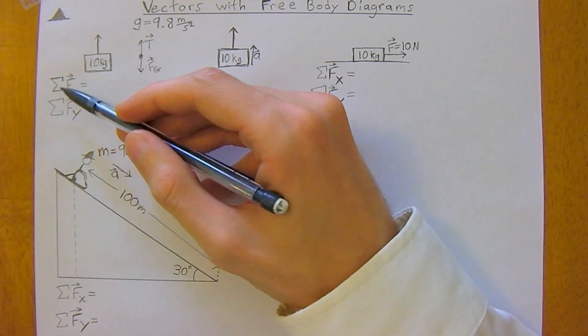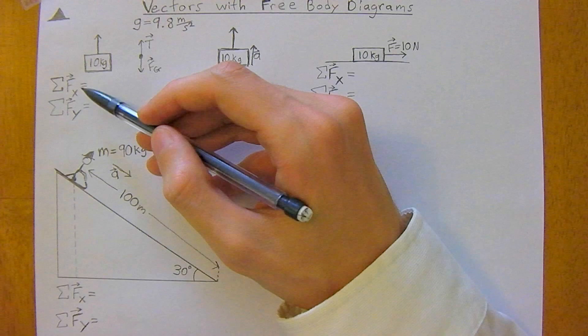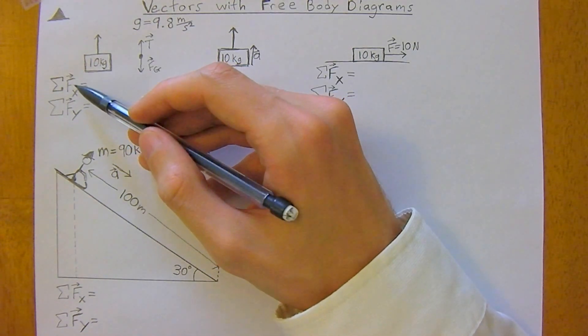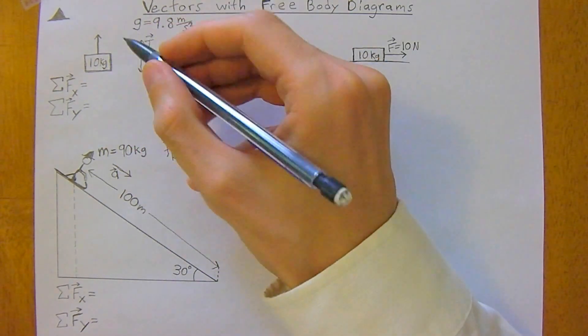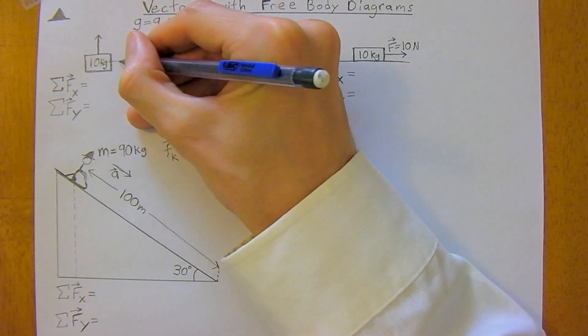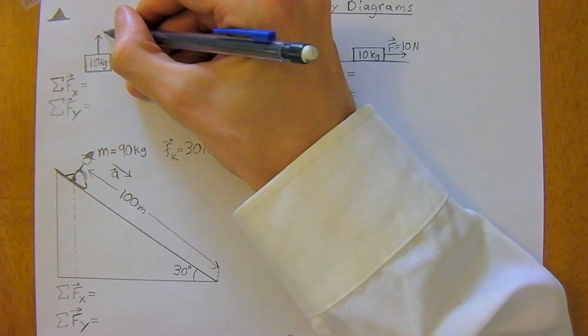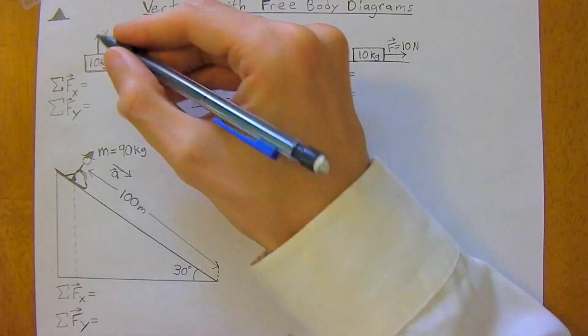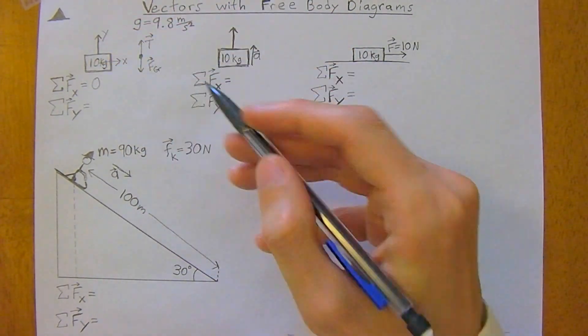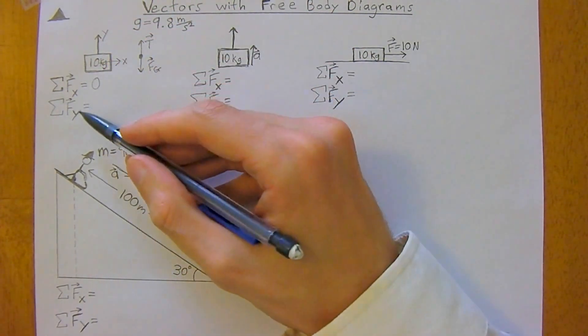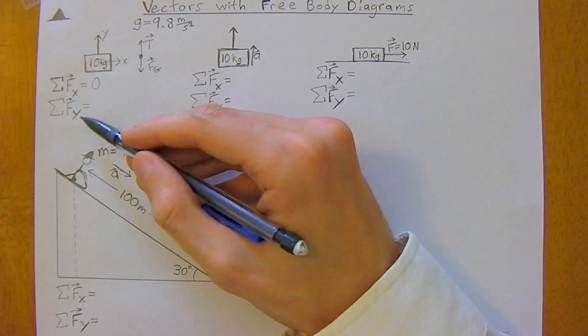And so when we sum up, and this fancy symbol here just means you add up all the forces on the y-axis. And well, there are no forces on the x-axis. So there are no forces on the x-axis, so we're done. But now we need to look at the forces on the y-axis.